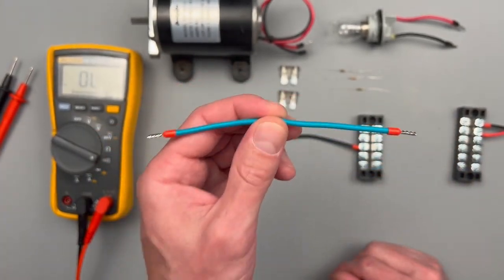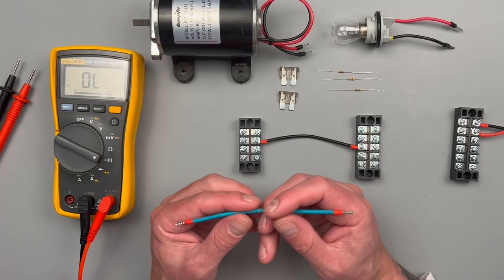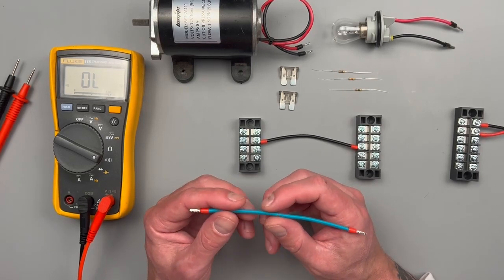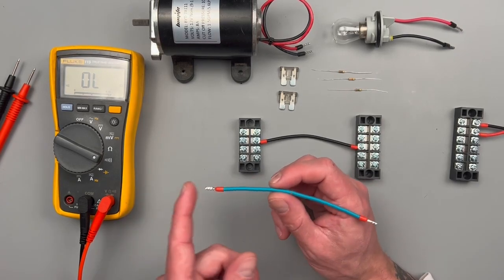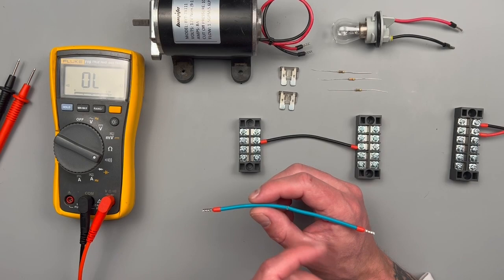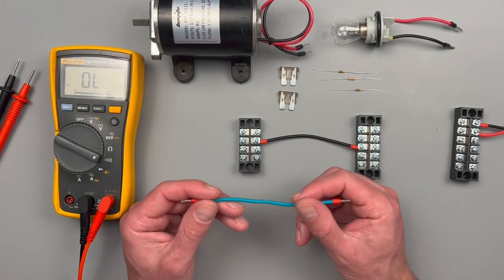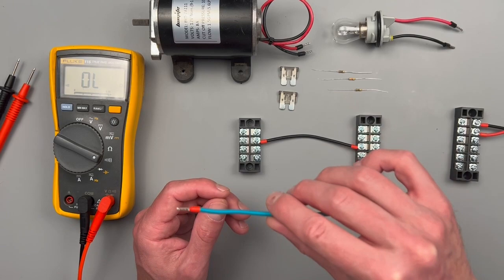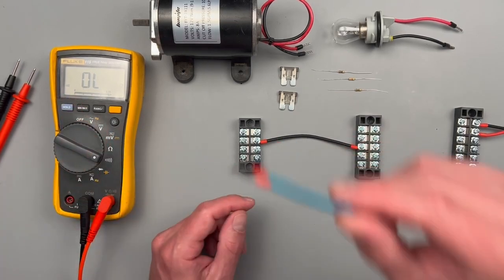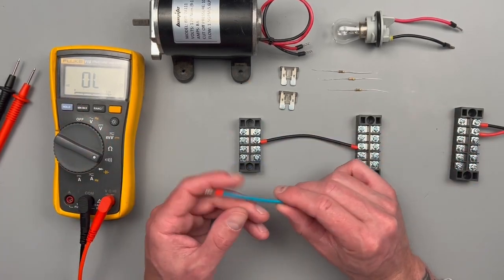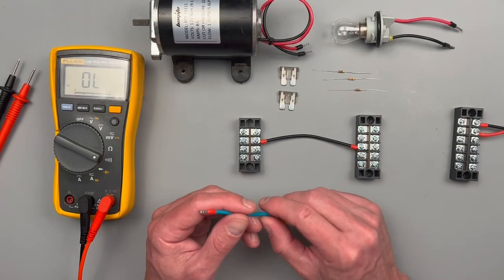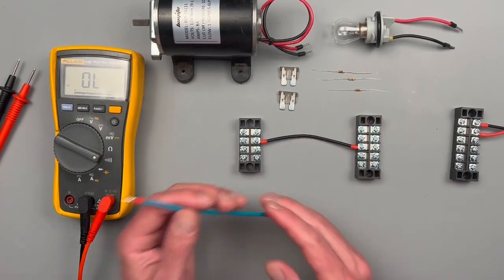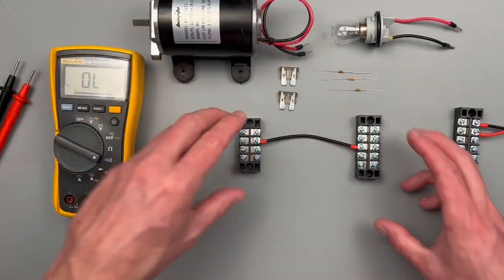It only takes the contact of one little strand in this wire to test positive for continuity. So continuity is really just letting you know there's some kind of electron flow happening. It doesn't mean that the wire is good, just means that there's something available for flow to take place. You can see even though this wire is really damaged, our numbers were dancing all over the place but we still got it down to like one or two ohms.